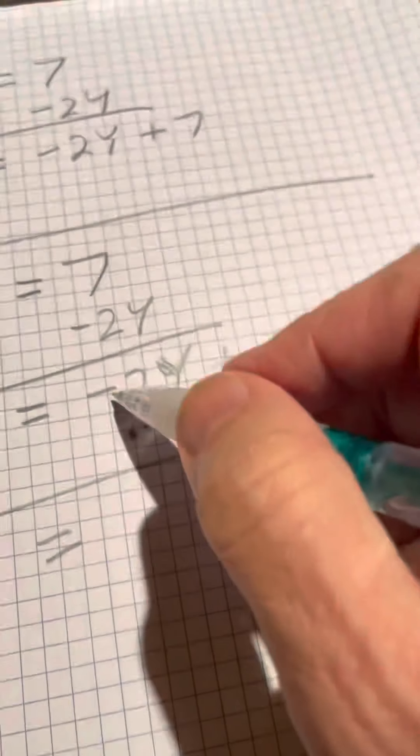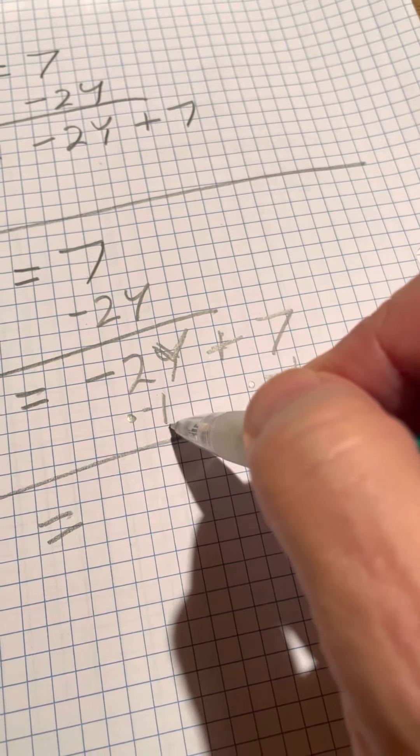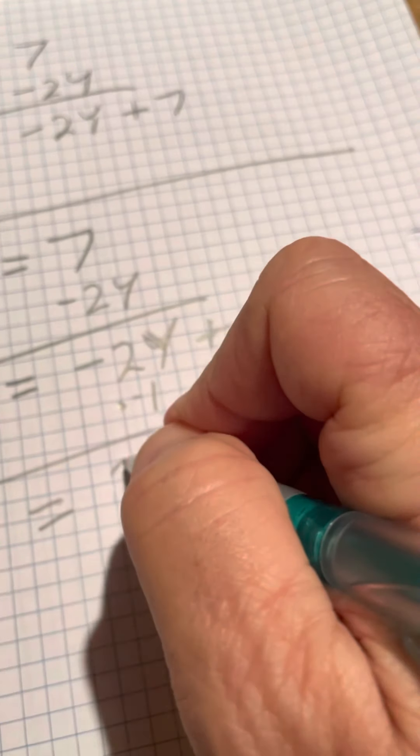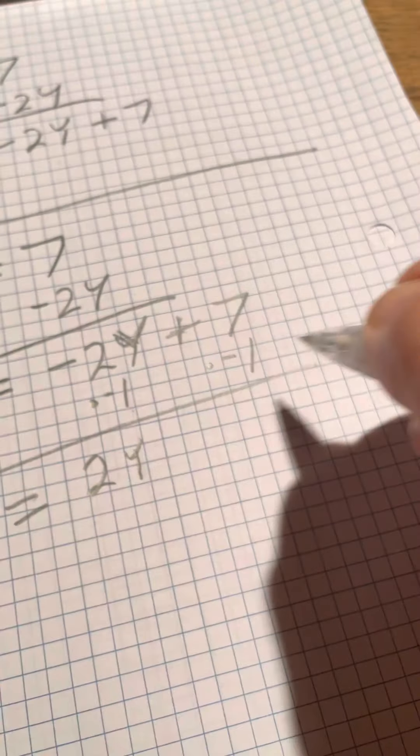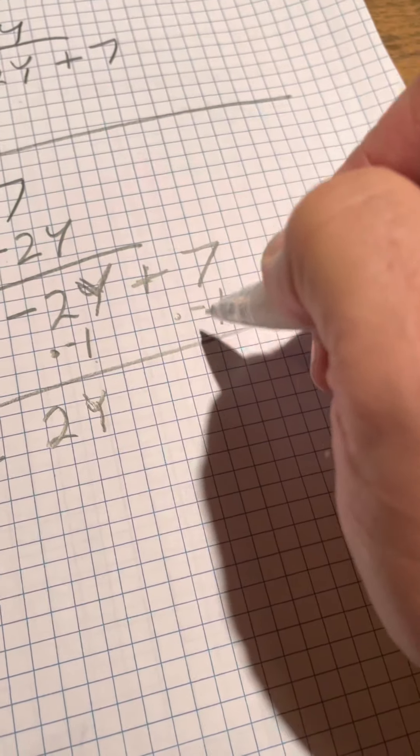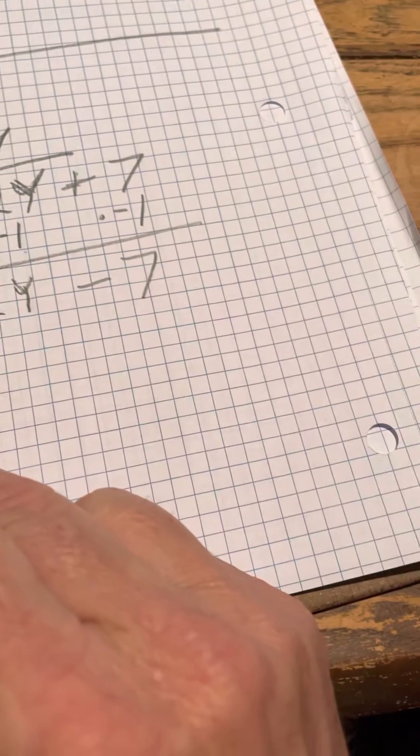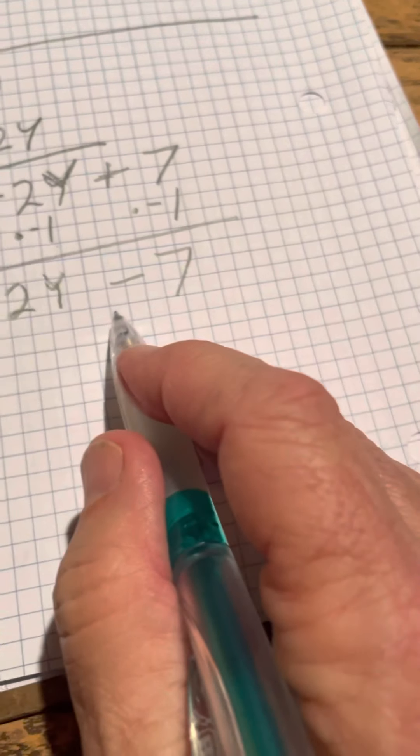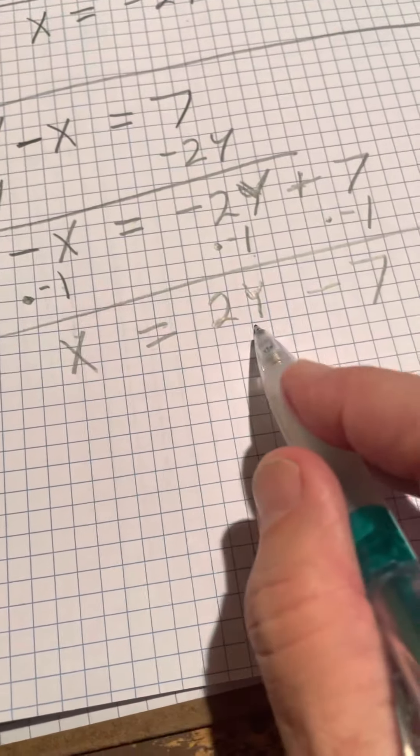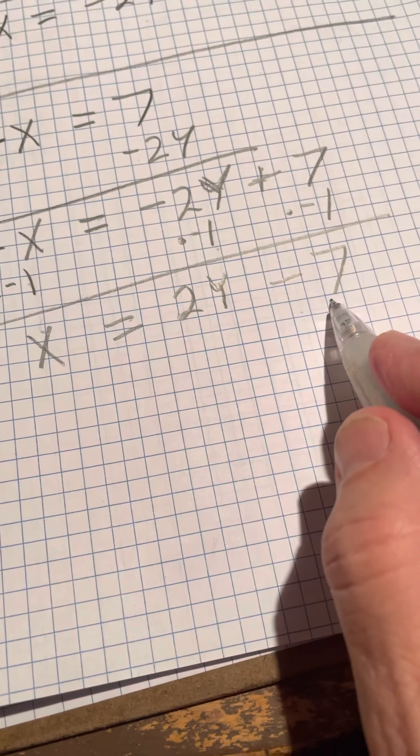Equals, what's negative 2 times negative 1? Well, that's 2y. So there, now in this case, it says x equals 2y minus 7.